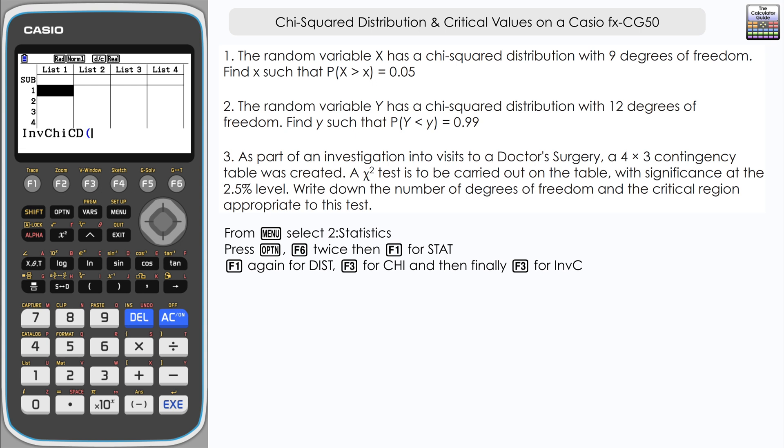Now the way that you need to input this is you want to input your probability first, and then a comma, and then your degrees of freedom. So in this particular example, we have a probability of 0.05, and then we have comma and degrees of freedom is 9 from the question.